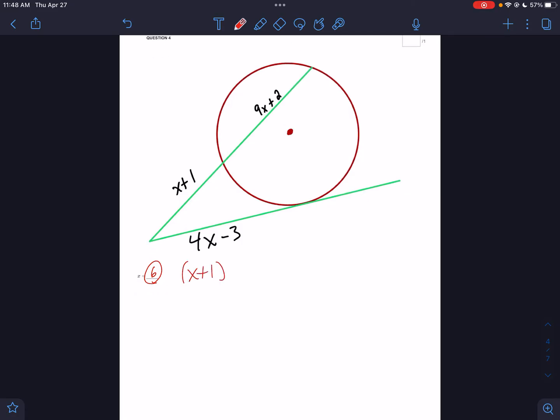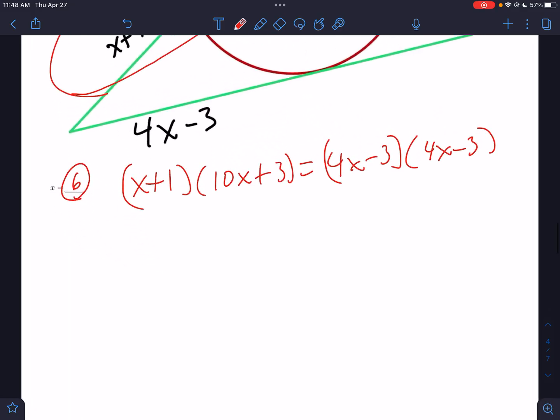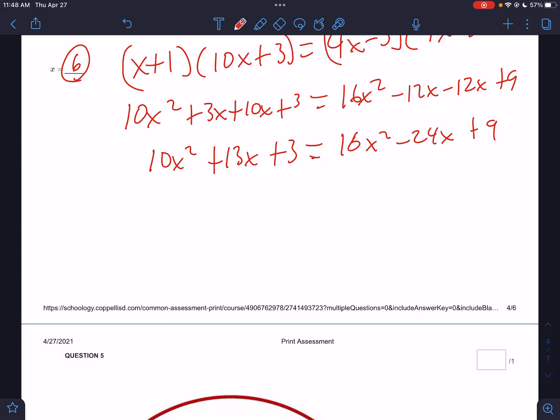Question number four: outside times total equals outside times total. Outside (x + 1), all of this would be (10x + 3), equals outside (4x - 3) times total (4x - 3). I've got a lot of distributing to do. That'd be 10x² + 3x + 10x + 3, that's 10x² + 13x + 3. Over here we'd have 16x² - 12x - 12x + 9, that is 16x² - 24x + 9. Make one side 0: that would be 6x² minus 37x plus 6.